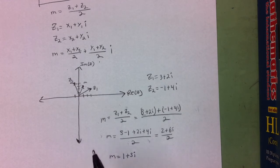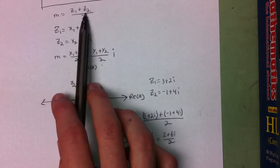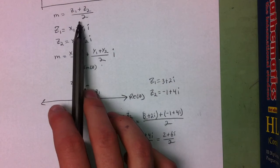So when you want to find the midpoint of two complex numbers, all you have to do is add the two complex numbers together and divide by 2.